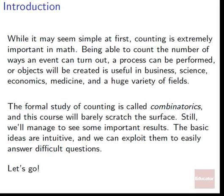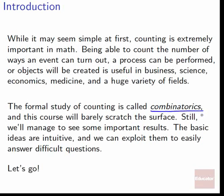At first you're probably thinking you could just count them — one, two, three, four, five, six — and be done. Why turn it into a thing in math? Well, what if you need to count a hundred, or a thousand, or a million of something? You can't count a million of things by hand in any reasonable amount of time. That's going to take you more than a year. So we need some way to count on a large scale, and that's why math does a major study of counting. The formal study of counting is called combinatorics, and this course will barely scratch the surface of it. Still, we'll see some really important results that let us explore interesting, cool things. The basic ideas are intuitive and make a lot of sense, but we can exploit them to answer really difficult questions, and it won't be very hard at all.